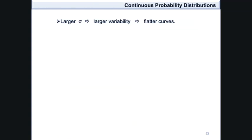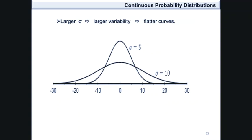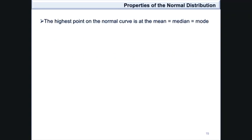In conclusion, the larger the value of σ, the larger the variability and therefore the flatter the curve. The highest point on the normal curve is at the mean, which is equal to the median, and that is equal to the mode.